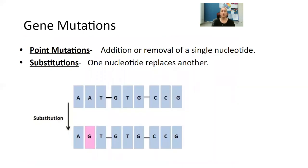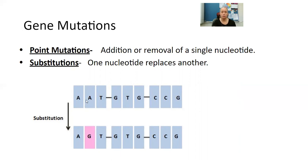There are also things called point mutations — the addition or removal of a single nucleotide. Then we have substitution, where one nucleotide replaces another. In this example, they're showing us that instead of the normal pattern, a G gets put in instead of an A. If given a picture of this on a test, you would need to know that that is substitution.